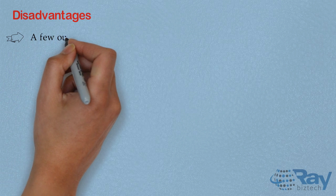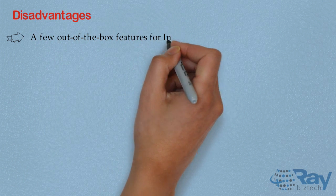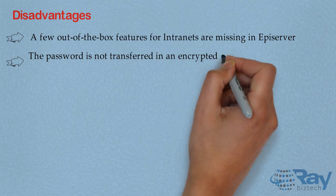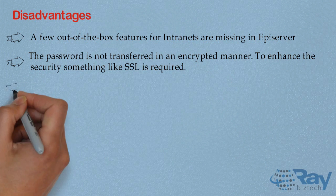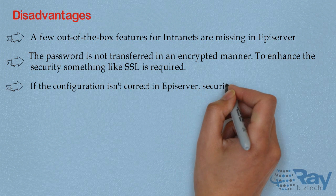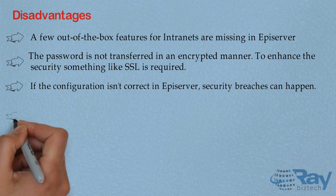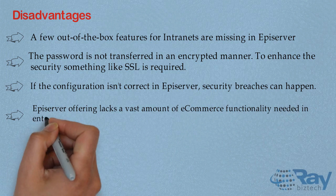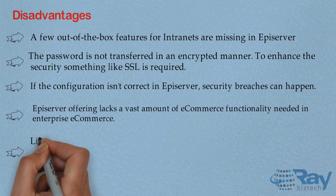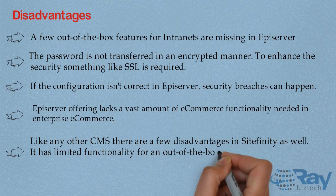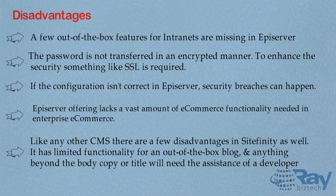Disadvantages: A few out-of-the-box features for Intranet are missing in API Server. Passwords are not transferred in an encrypted manner, and something like SSL is required to enhance security. If the configuration is not correct in API Server, security breaches can happen. API Server also lacks a vast amount of e-commerce functionality needed in enterprise e-commerce. Like any other CMS, Site Affinity also has a few disadvantages, including limited functionality for an out-of-the-box blog — anything beyond basic content will require the assistance of a developer.